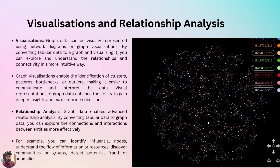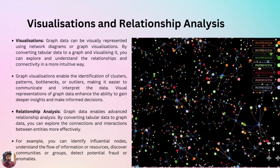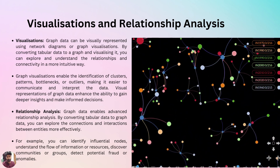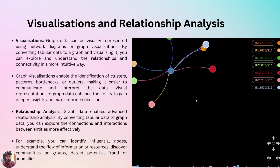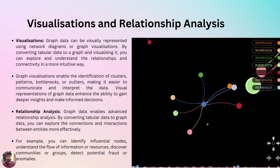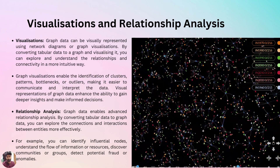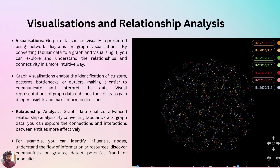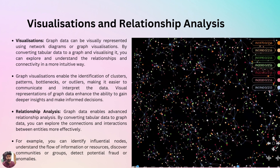Graph data can be visually represented using network diagrams or graph visualizations. By converting tabular data to graph data and visualizing it, you can explore and understand relationships and connectivity in a more intuitive way. Graph visualization enables the identification of clusters, patterns, bottlenecks, or outliers, making it easier to communicate and interpret the data. Visual representation of graph data enhances the ability to gain deeper insight and make informed decisions.